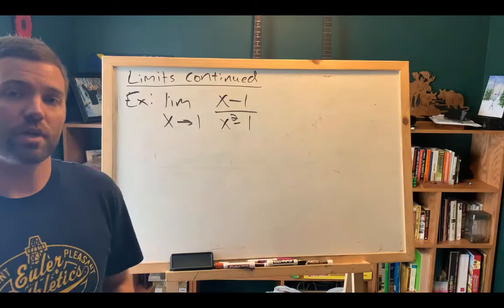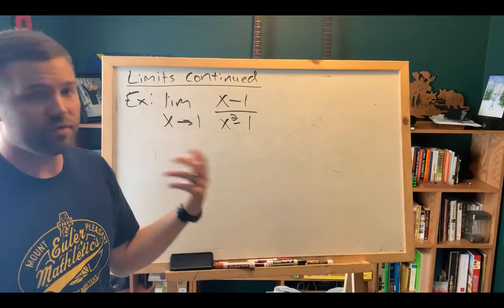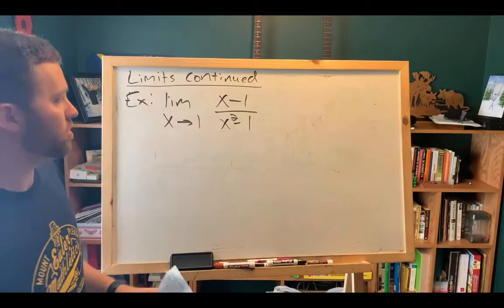Step two is algebraic manipulation. The question is, what can I do with this function to simplify it? And what you should think to do, hopefully, is factor. That should at least be always an option on the table that you check. Can I factor? You can. The top is already prime, it's unfactorable. But the bottom is not.